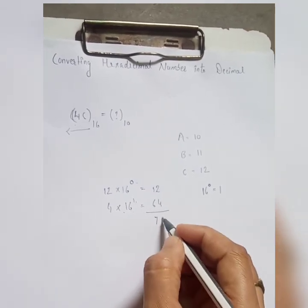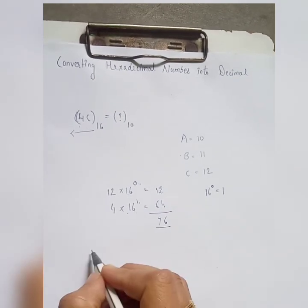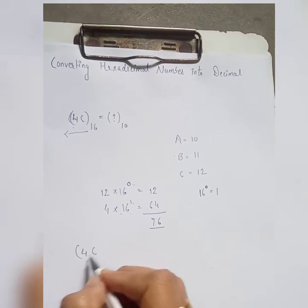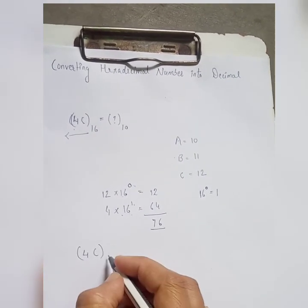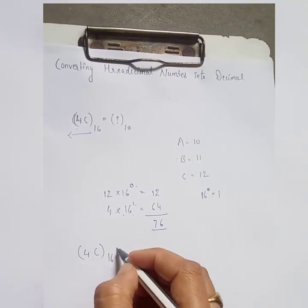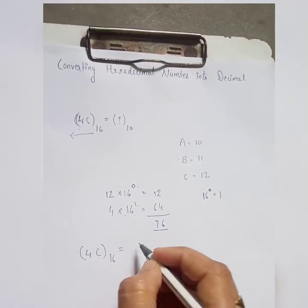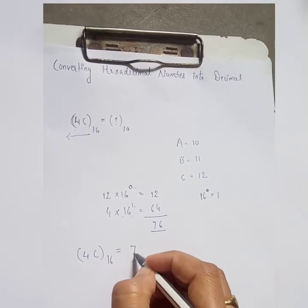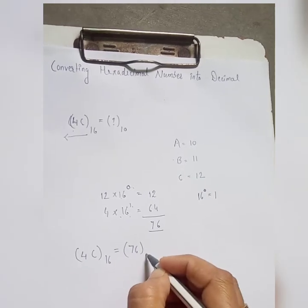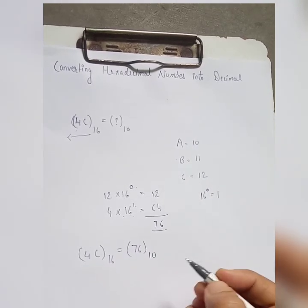When we add both numbers — 12 plus 64 — we get the result 76. So 4C is a hexadecimal number and when we convert it into decimal we get 76 with base 10.